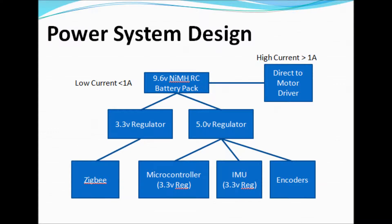This is our power system design. We have a battery pack powering a 3.3-volt regulator and a 5-volt regulator. Our Zigbee is getting power from the 3.3-volt regulator. Our microcontroller, IMU, and encoder sensor are getting power from the 5-volt regulator. The microcontroller and IMU also have a 3.3-volt on-board regulator, and our motor driver is getting power directly from the battery pack.